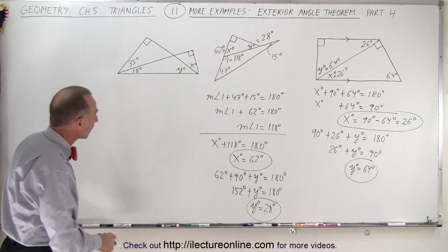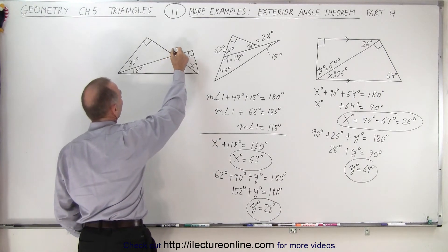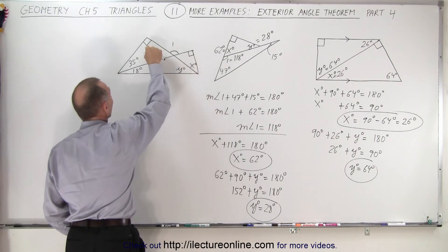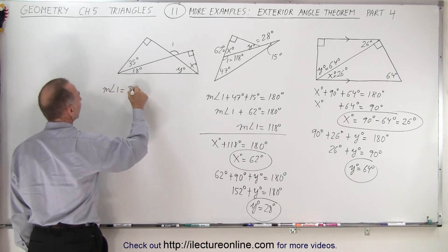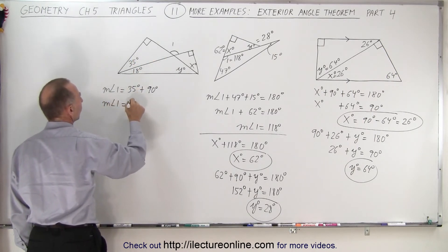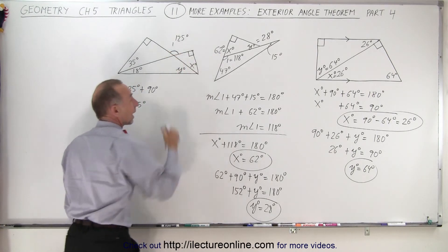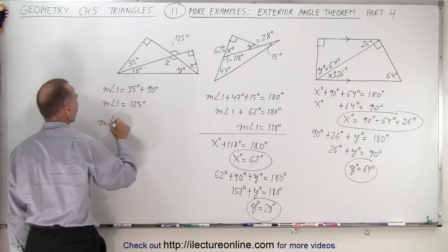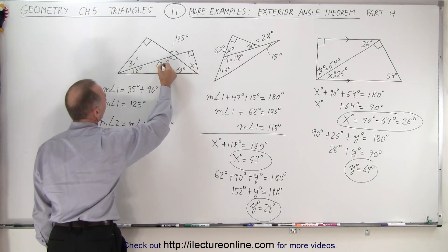Our last example. Here is an exterior angle — let's call that angle 1. It's an exterior angle, which means its measure must equal the sum of the two non-adjacent interior angles. So the measure of angle 1 equals 35 degrees plus 90 degrees, because that's a right angle. Therefore angle 1 equals 125 degrees. These are two vertical angles and must be equal, so angle 2 also equals 125 degrees.